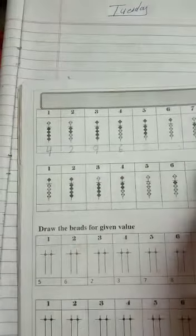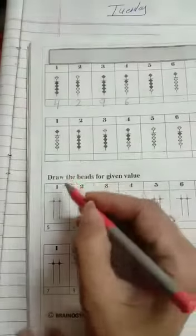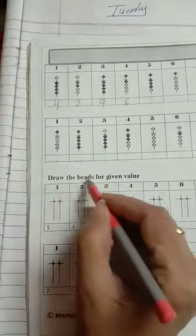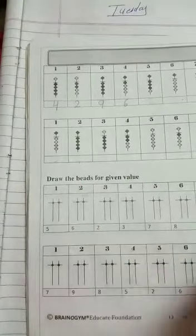So same trick, we have to complete section A and B. Now second, draw the bits for given value. This is the value and draw the bits.